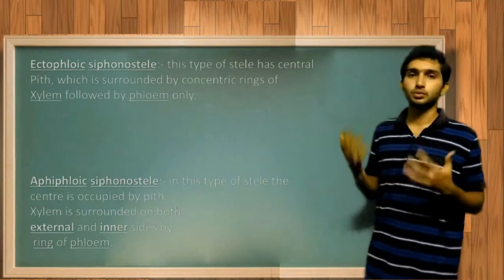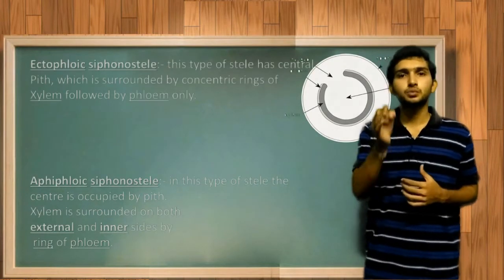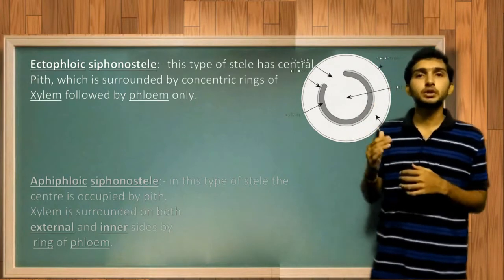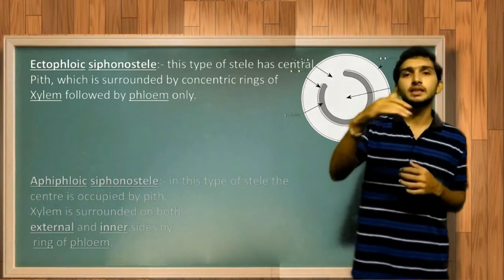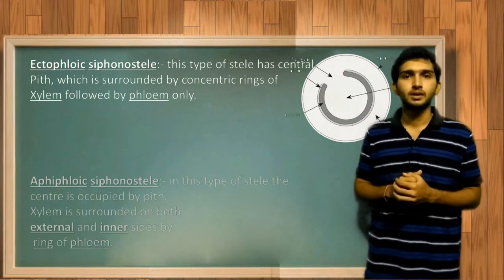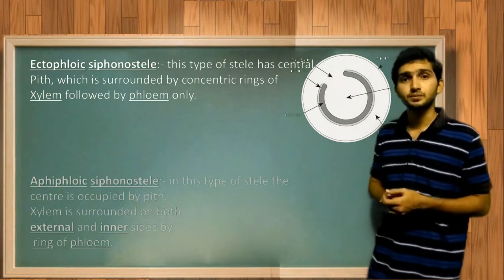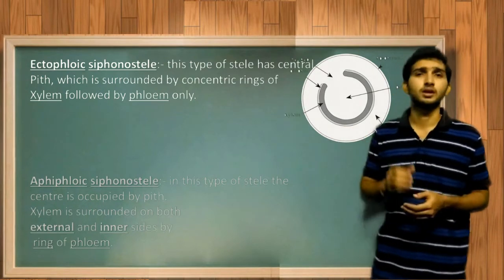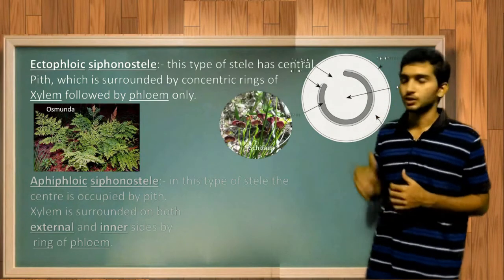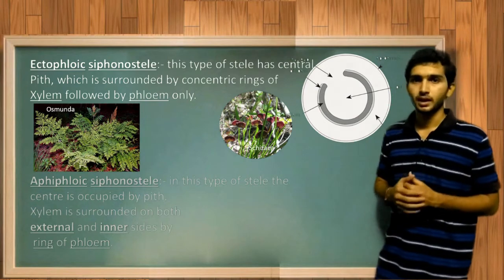In ectophloic siphonostele, the central core is occupied by pith, and the xylem is surrounded by a single layer of phloem on the outside only. The best examples for ectophloic siphonostele are Osmunda and Schizaea.